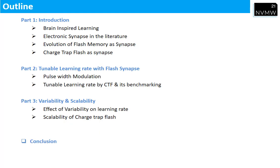The outline of my talk: I have divided this talk into three parts. In the first part, I will explain brain-inspired learning, electronic synapses in the literature, evaluation of flash memory as a synapse, and how charge drive flash memory works as a synapse. In the second part, we will discuss the tunable learning rate and its benchmarking with state of the art. In the third part, I will discuss the variability and scalability of charge drive flash memory as a synapse. At last, I will conclude this talk with the highlights of the research.